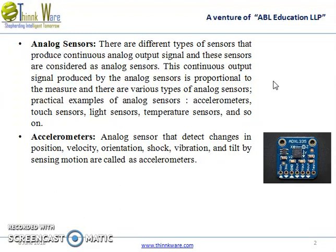This continuous output signal produced by the analog sensor is proportional to the measurement. There are various types of analog sensors: accelerometers, touch sensors, light sensors, temperature sensors, and so on.